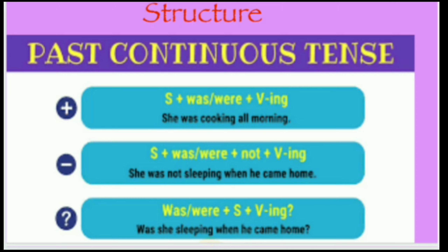For making it negative, after 'was' or 'were,' we put 'not.' Structure: Subject + was/were + not + first form of verb with -ing. For example: 'She was not sleeping when he came home.' For interrogative, put the helping verb before the subject: Was/Were + subject + first form of verb with -ing + question mark. For example: 'Was she sleeping when he came home?'